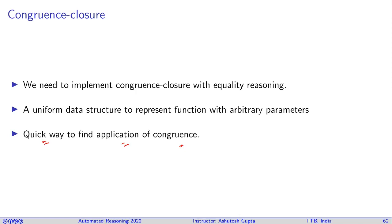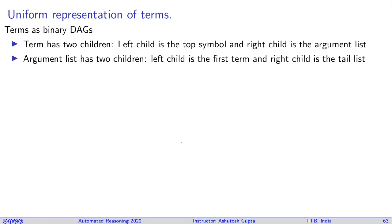First, look at the uniform representation of terms. Each term will have two children: the left child is the top symbol and the right child is the list of arguments. Furthermore, each list has two children: one is the top term in the list and the rest of the arguments in the list.